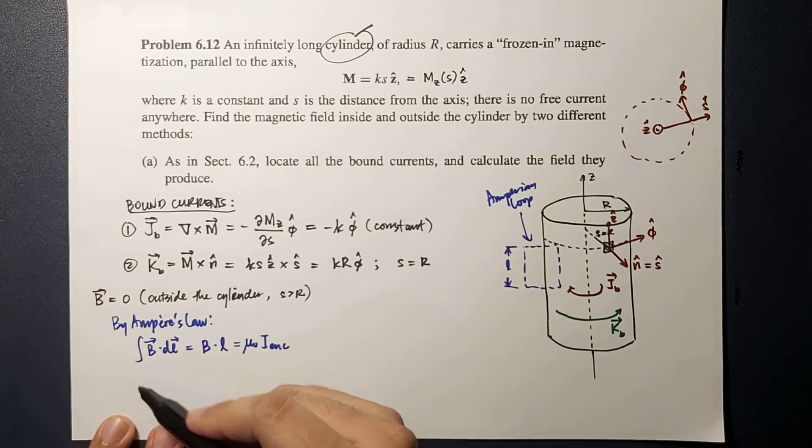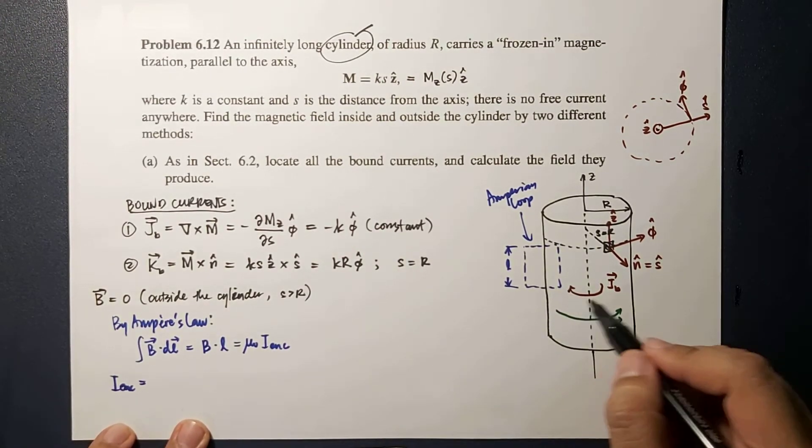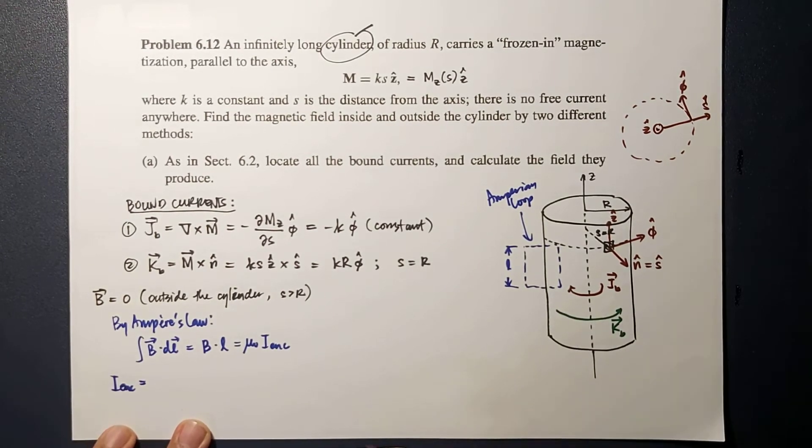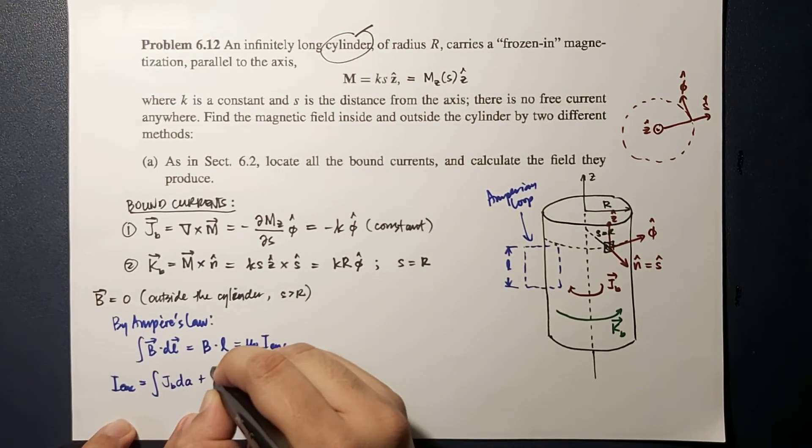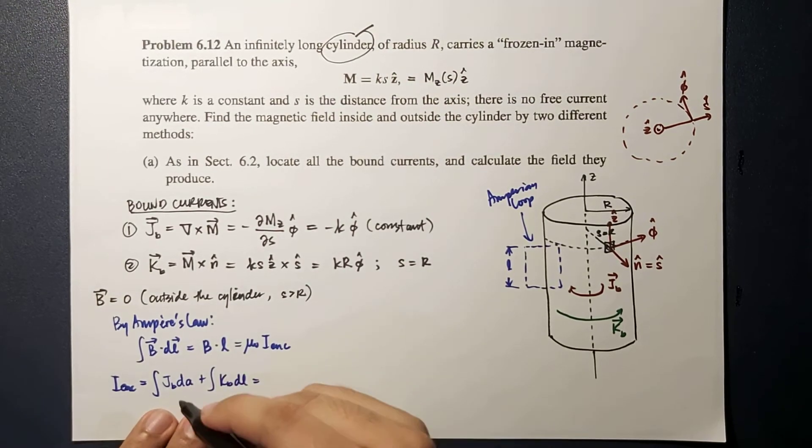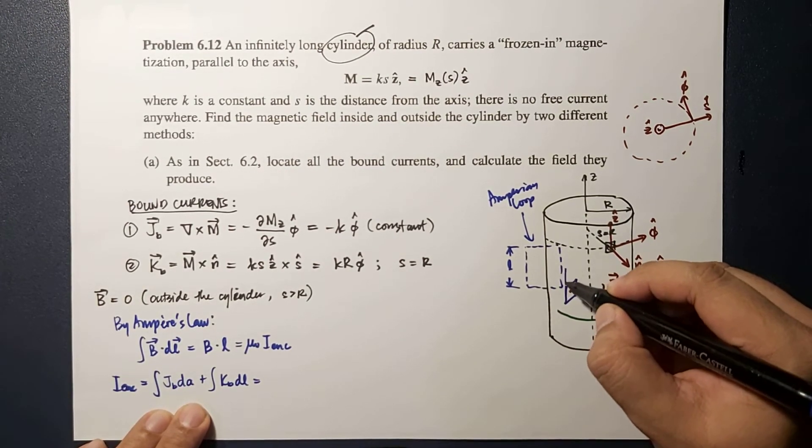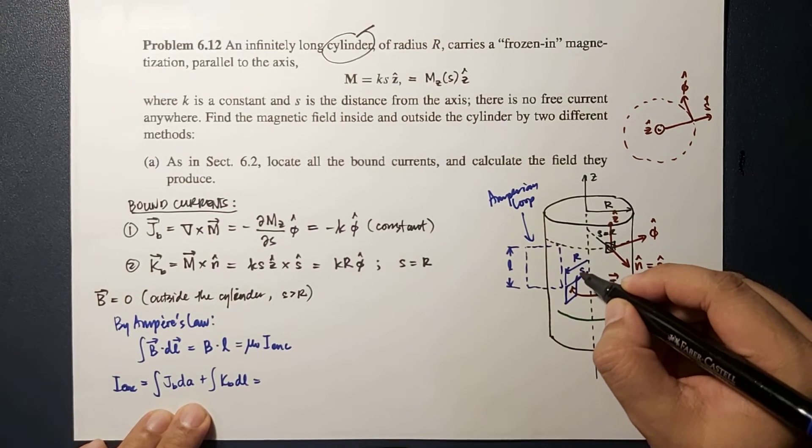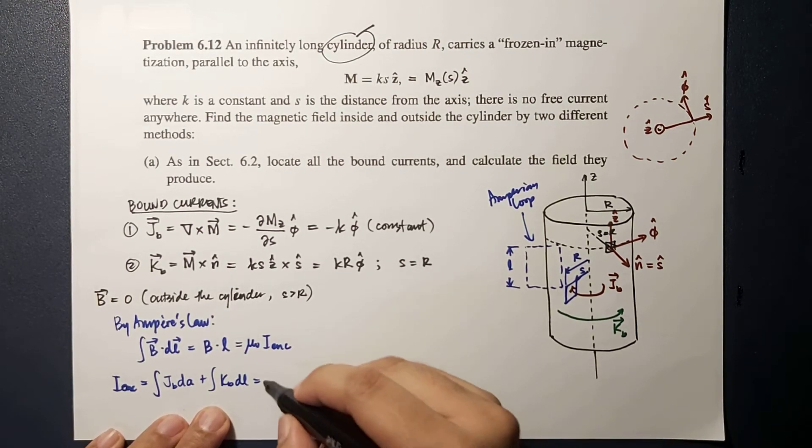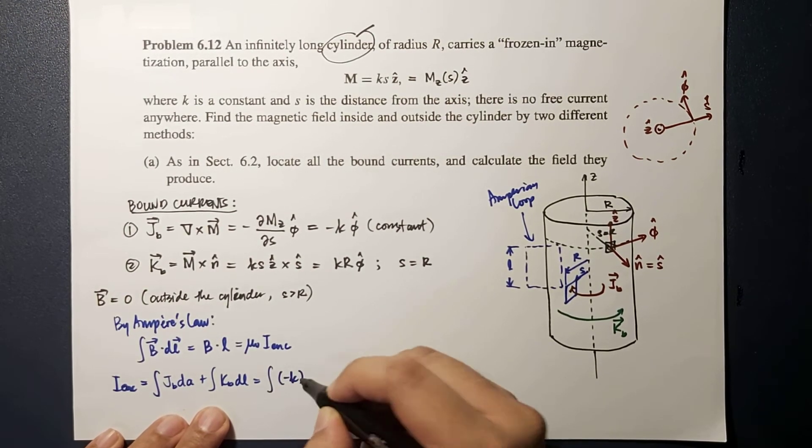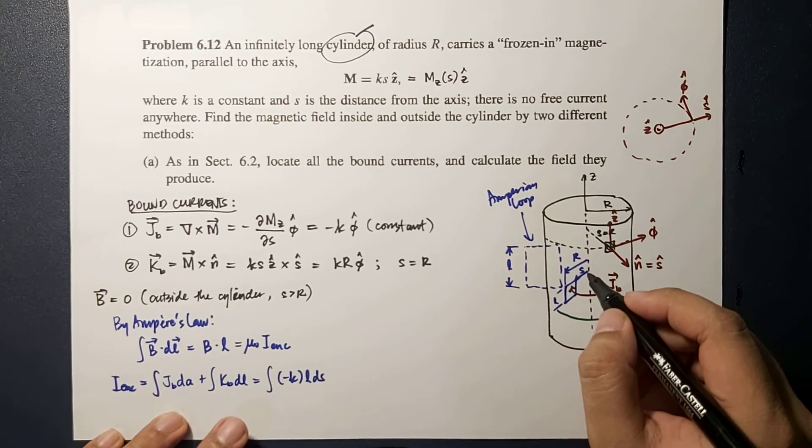Notice that I enclosed will be the current produced by your volume current and your surface current. This is equal to the integral of JB dA plus integral of KB dL. The dA for JB would be this direction, wherein this would be R and this would be S.